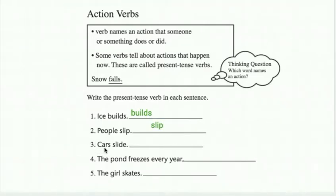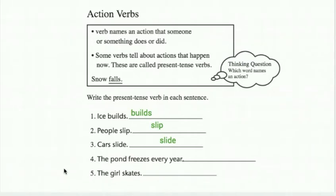Number three: Cars slide. Cars — those are things. Slide — that's an action. Number four: The pond freezes every year. Which word names an action? That's something that someone or something does or did. That is the word freezes. That's an action — the pond freezes.